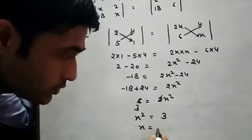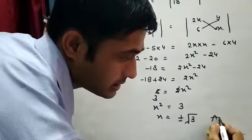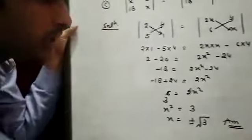Student x squared equals 3. So x equals student square root plus minus 3. This is my student answer.